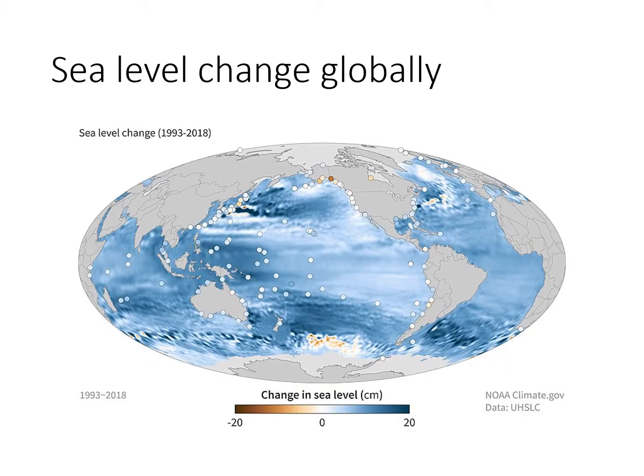This slide compiles gauge data and satellite data to estimate sea level change from 1993 to 2018. Dots show data from gauge stations, and the stippled colors on the map show data from satellites. Although sea level rise is highly variable, almost everywhere shows sea level rise increasing.